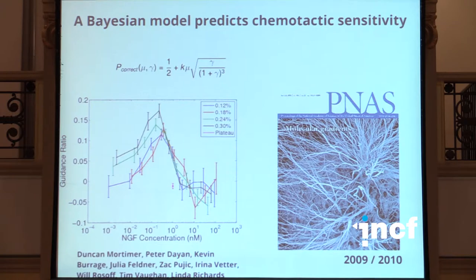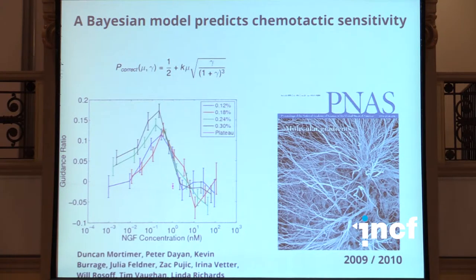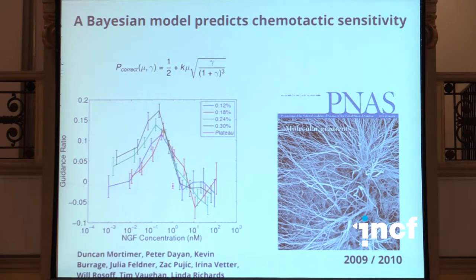This formula essentially applies to any chemotactic system and can be used to predict chemotactic performance. What we've shown is that, consistent with the prediction, growth cones are only sensitive to gradients over a relatively narrow range of concentrations — about two orders of magnitude. This has consequences for understanding therapies for regeneration: it's no good just to add a lot of some chemotropic factor. It needs to be at the right concentration in order to be effective in guiding axons.